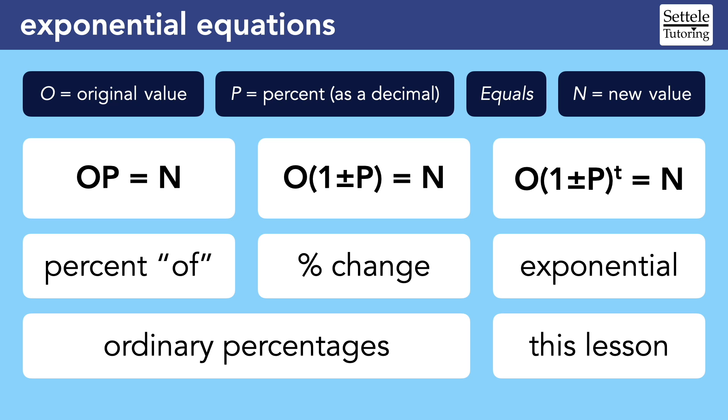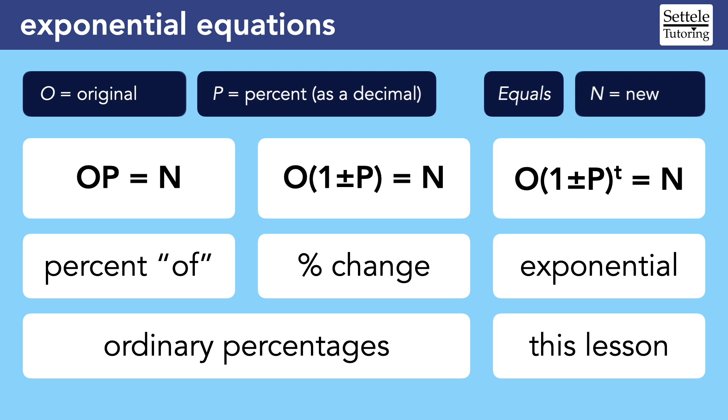We're still going to use the same constants, namely that O is the original value, P is the percent as a decimal, and on the other side of the equal sign, N is the new value. But we're also going to add in a variable.